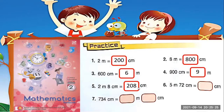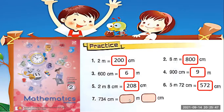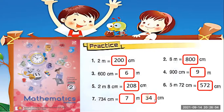Number 6: 5m plus 72cm — 5m is 500cm, so 500cm plus 72cm equals 572cm. Number 7: 734cm — we split this into meters and centimeters. 700cm is 7m, and the remaining centimeters are 34cm. So 734cm equals 7m and 34cm.